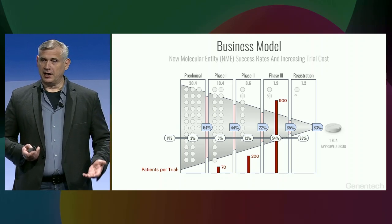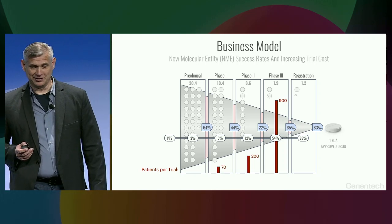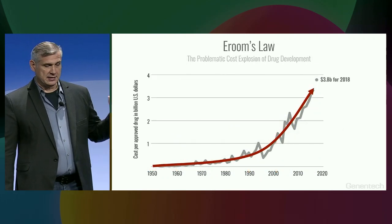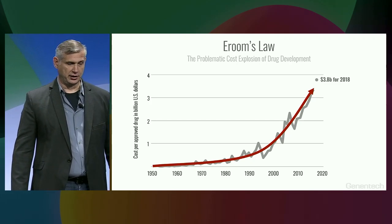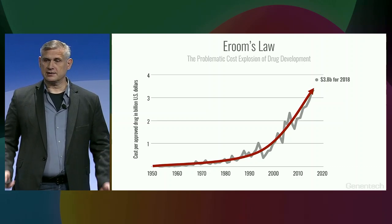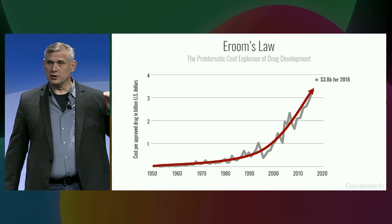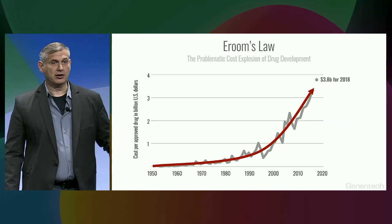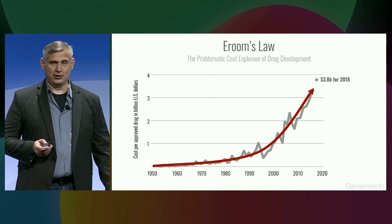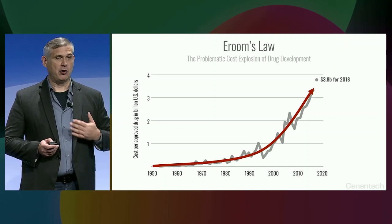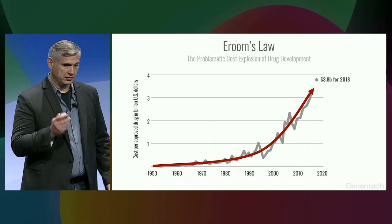But it gets worse. What you see here is the historical development of cost per single drug to actually make it to market over several decades. We call this Eroom's law, which is literally Moore's law spelled backwards. So where Moore's law improves over time exponentially, our cost increases over time exponentially. You don't have to be a pharma expert to know that this is not sustainable. However, we at Genentech see huge opportunity here for AI to actually reverse that trend and improve drug discovery as a whole.